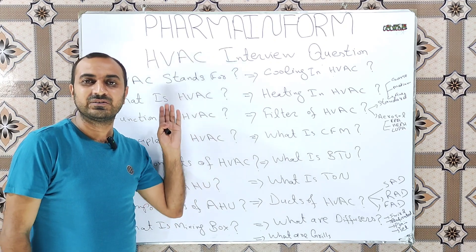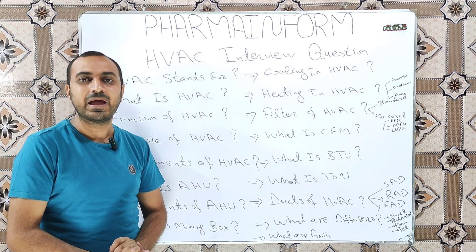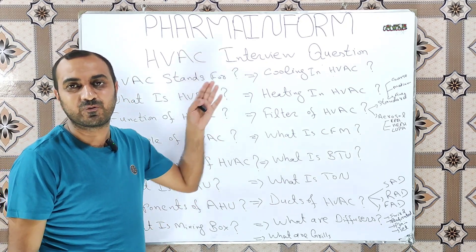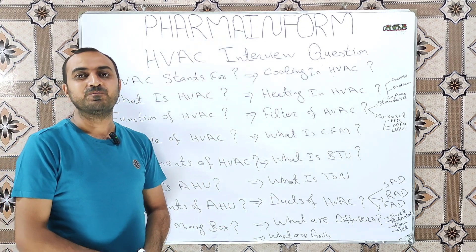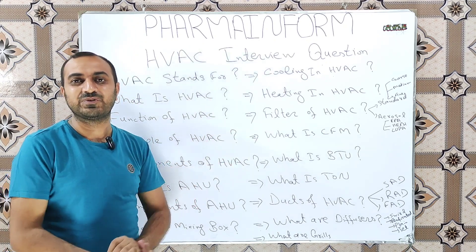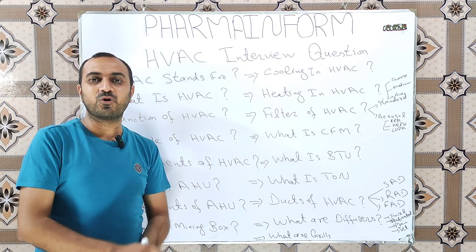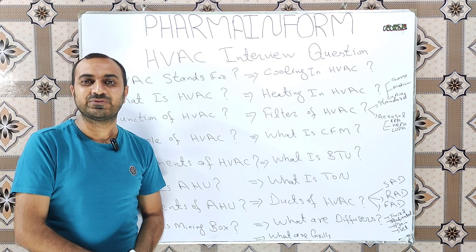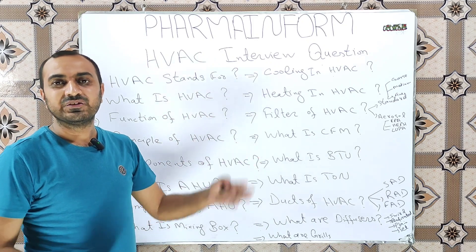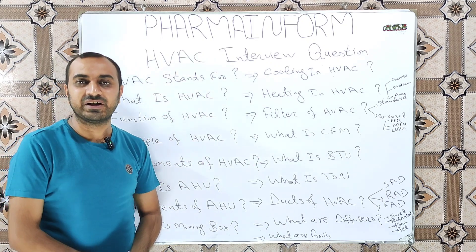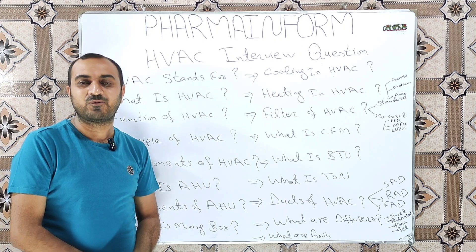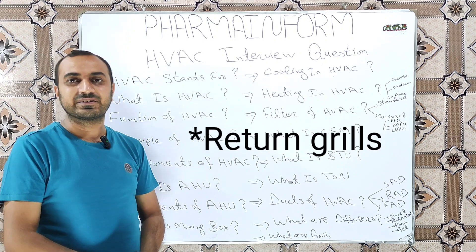If you want to learn this basic principle in detail, watch the video on the principle of HVAC — the link is provided in the description. The next question is: what are the components of HVAC? There are basically four main components: the first is the AHU, the second is the duct, the third is the diffusers, and the fourth is the return duct.